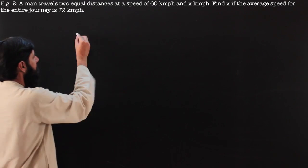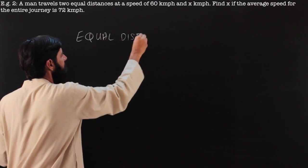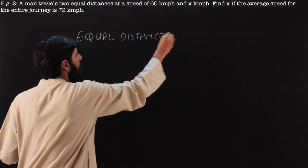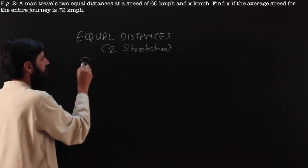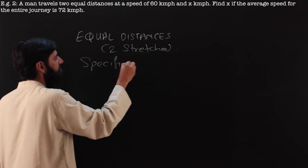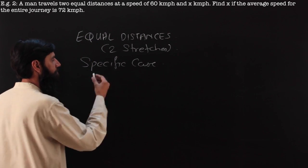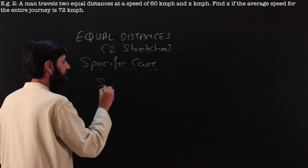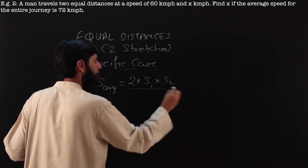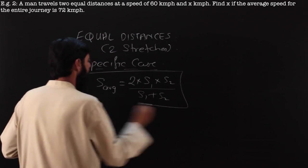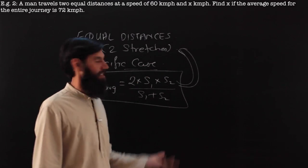Simple one. What should immediately strike you is that there are two equal distances and two stretches. This becomes a specific case, and if this is a specific case, we can use the shorter formula or the derived formula. In this specific case, average speed is given as 2 times s1 into s2 over s1 plus s2.